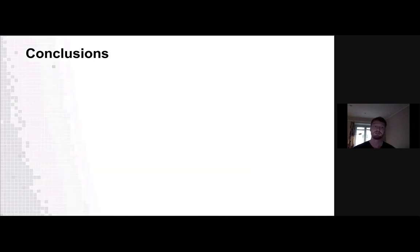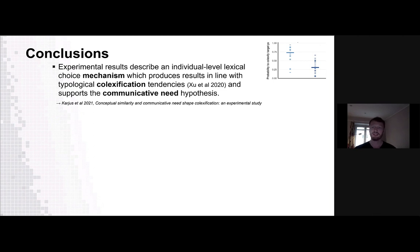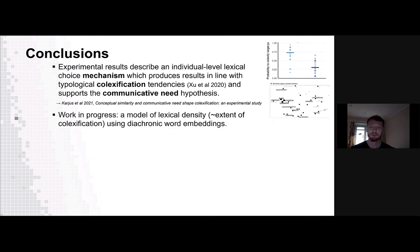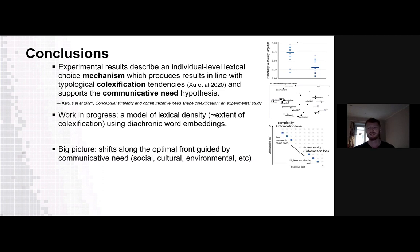Conclusions: what we describe here is an individual-level lexical choice mechanism which produces results in line with typological colexification tendencies from previous literature, but also supports the communicative need hypothesis. For more details, check out the paper. I also have work in progress applying the same idea to diachronic corpora using word embeddings. The big picture is that these results support the idea that in actual language change, when languages shift along the optimal front, this is guided — among other things — by communicative need, which may stem from social, cultural, environmental, and other factors.